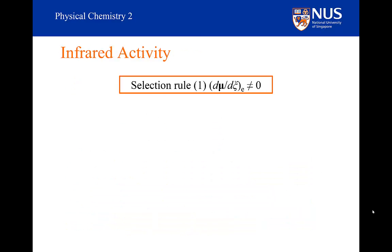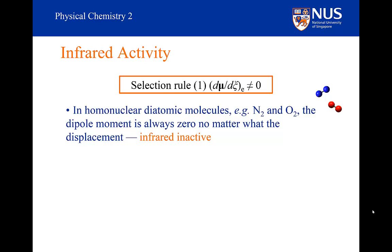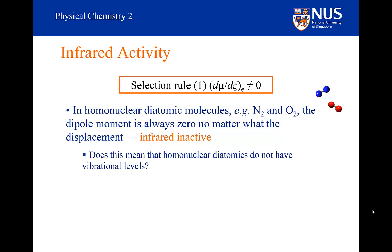The first selection rule is that the dipole moment as a function of the displacement has to change as we go through the equilibrium position. For homonuclear diatomics, this cannot occur. The dipole moment for homonuclear diatomics is zero no matter what the bond length is. During vibration, its dipole moment stays zero and its gradient stays zero. Therefore, homonuclear diatomics cannot exhibit an infrared or vibrational spectrum — they are known as infrared inactive. It does not mean that homonuclear diatomics do not have vibrational levels; it just means that I cannot use electromagnetic radiation to excite a molecule from one vibrational state to another. The Schrödinger equation tells us what the energies of those levels are, and thermal energy will change the vibrational state of the molecule.